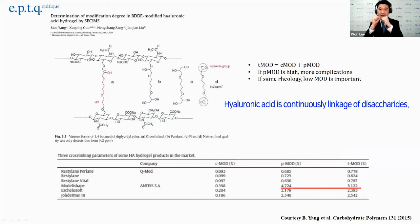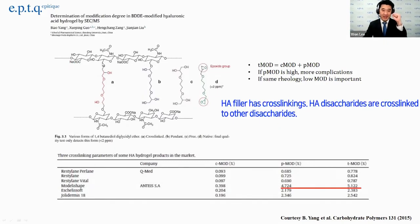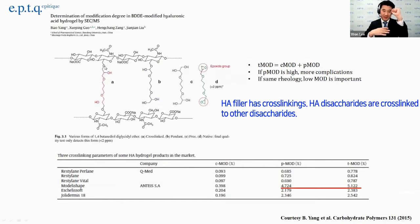Galleronate acid is a disaccharide. And as I mentioned, they have cross-linking to other disaccharides.